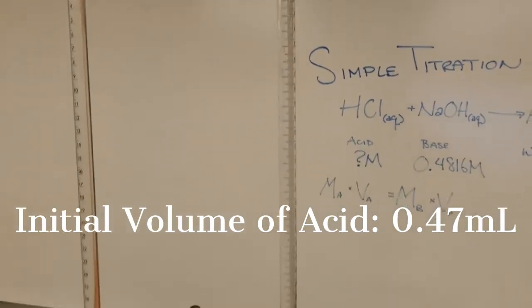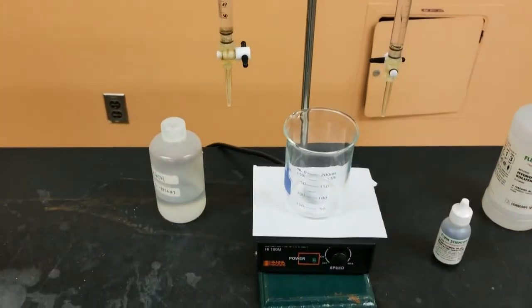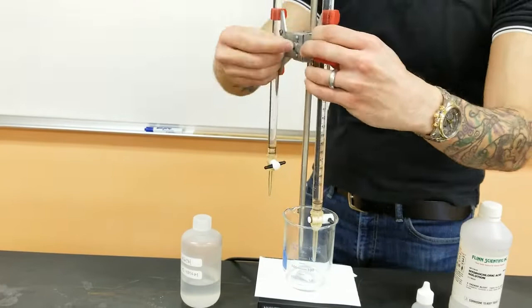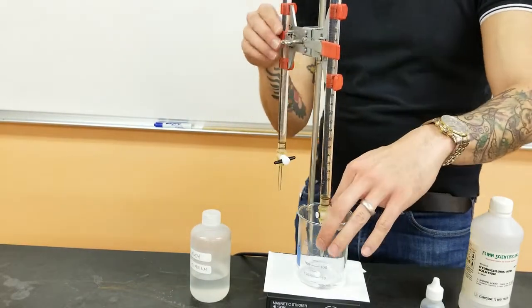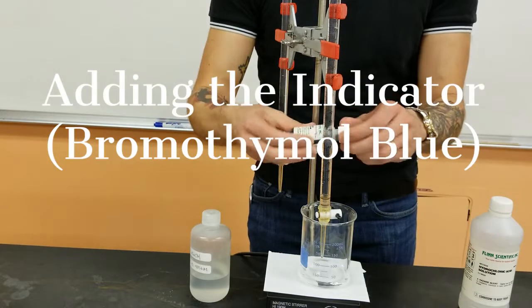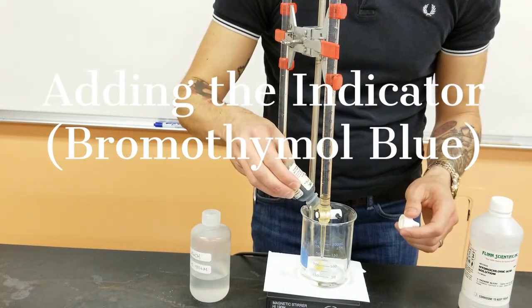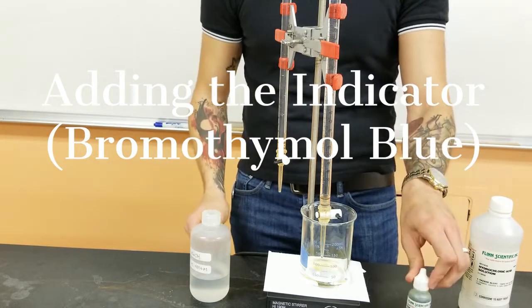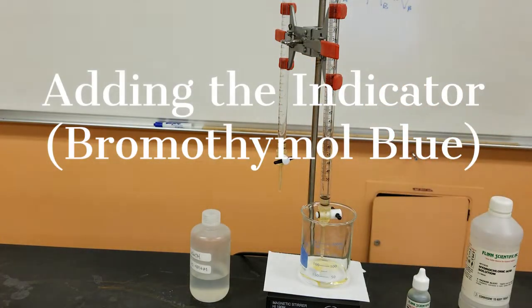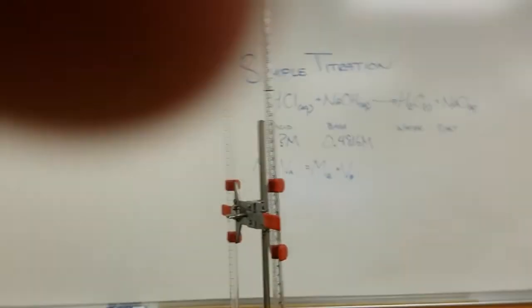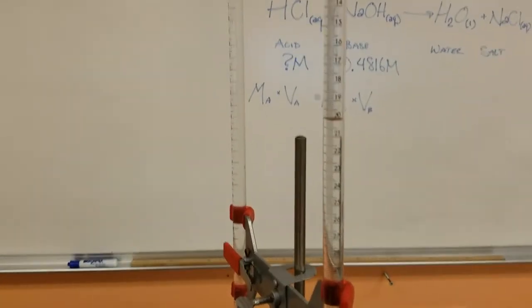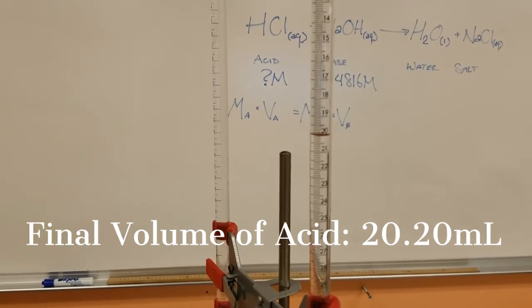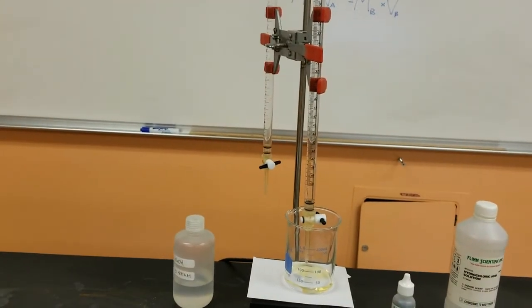So next step is going to be to drop in some of the acid into the beaker. It's now on the burette. This is the final volume, so you can find the amount of acid that was put into the beaker. Now, I'm going to switch and slowly drop the base.